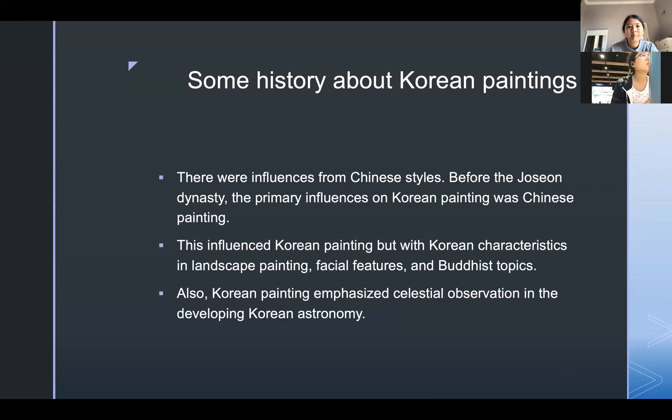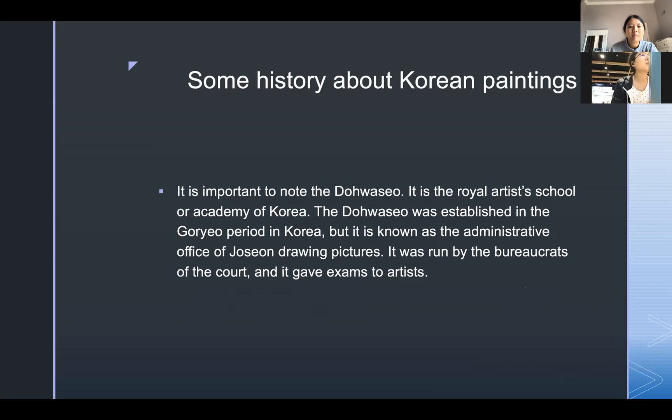It is important to note the Dohwaso. It is the Royal Artists School or Academy of Korea. The Dohwaso was established in the Goryeo period, but it is known as the Administrative Office of Joseon Drawing Pictures. It was run by bureaucrats of the court and it gave exams to artists.